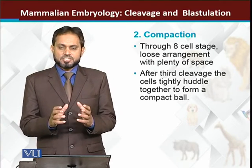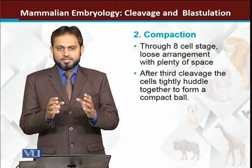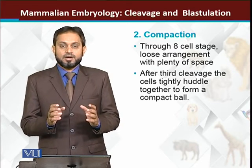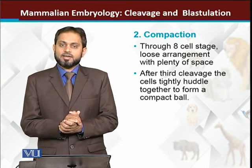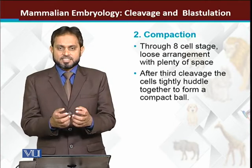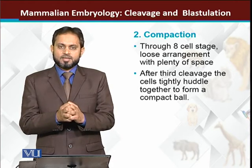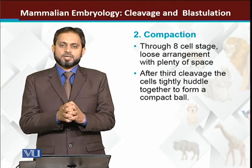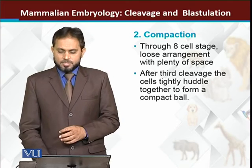As cells divide from two to four to eight cells, up until the eight-cell stage, the cells are not in a closely compact form — they are loosely arranged. When the eight-cell stage is reached, cells release specific proteins, and because of these proteins, the cells become tightly connected to each other. This process of cells huddling together and joining tightly is called compaction.